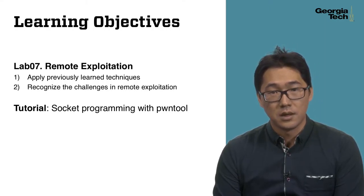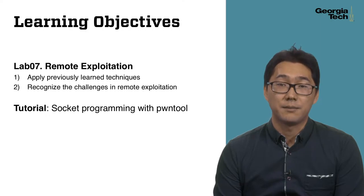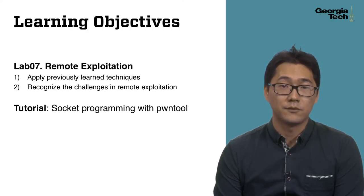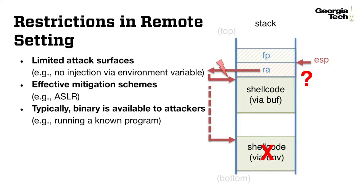In this week's tutorial, you will learn a basic tool to write an exploit for a remote environment. There are a few restrictions in the remote setting. First, they typically have a limited attack surface. For example, an attacker cannot inject the payload through the environment variable anymore. Second, probabilistic mitigations, such as ASLR, become much more effective in the remote setting.